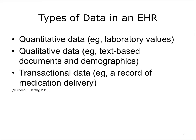Quantitative data includes numbers, such as a laboratory glucose result of 130, a patient date of birth, or a blood pressure of 130 over 70. Qualitative data includes narrative text, such as physician's notes, as well as demographic data such as race, ethnicity, and religion. A third type of data includes transactional data, such as date and timestamps of when medications were delivered.